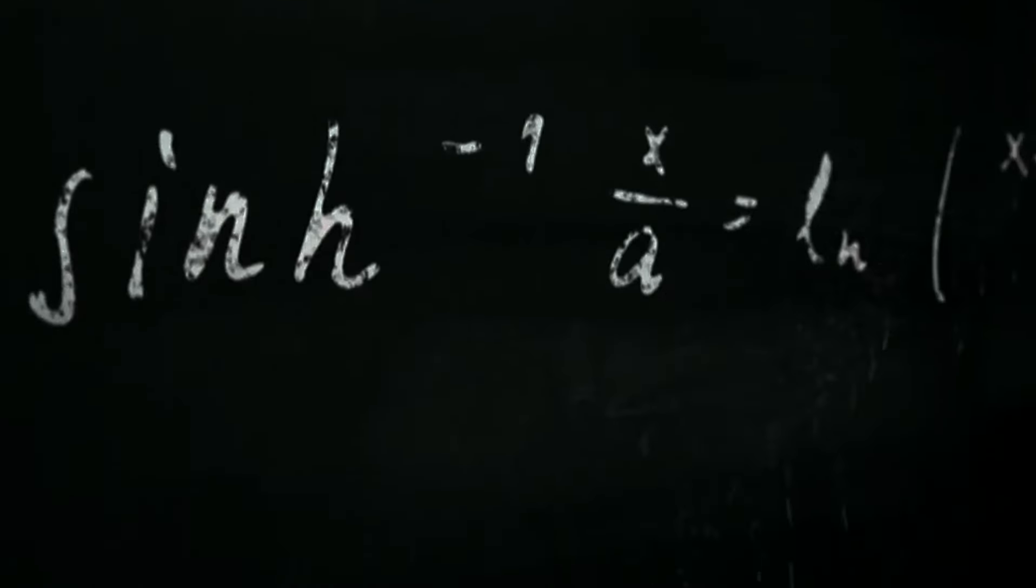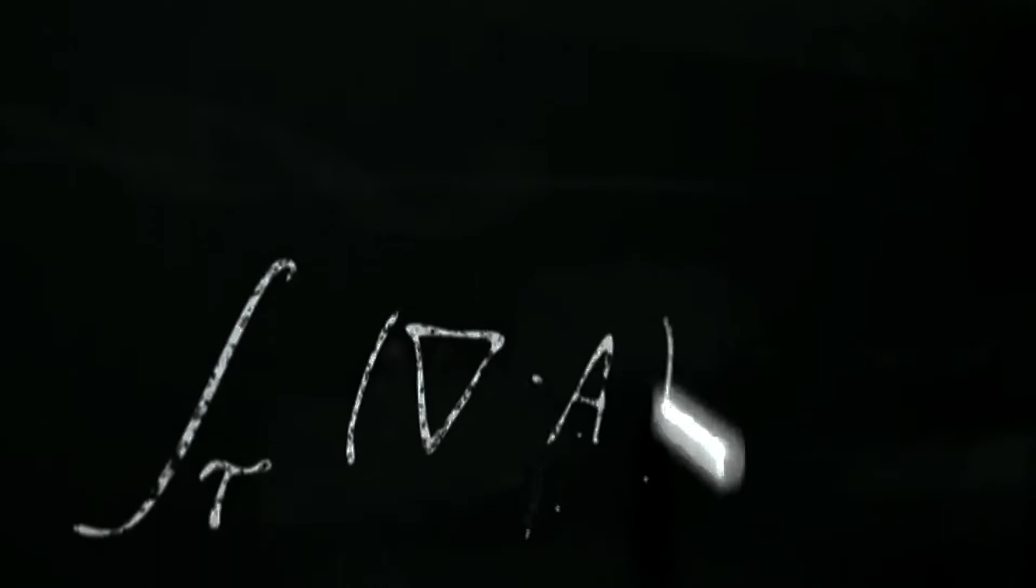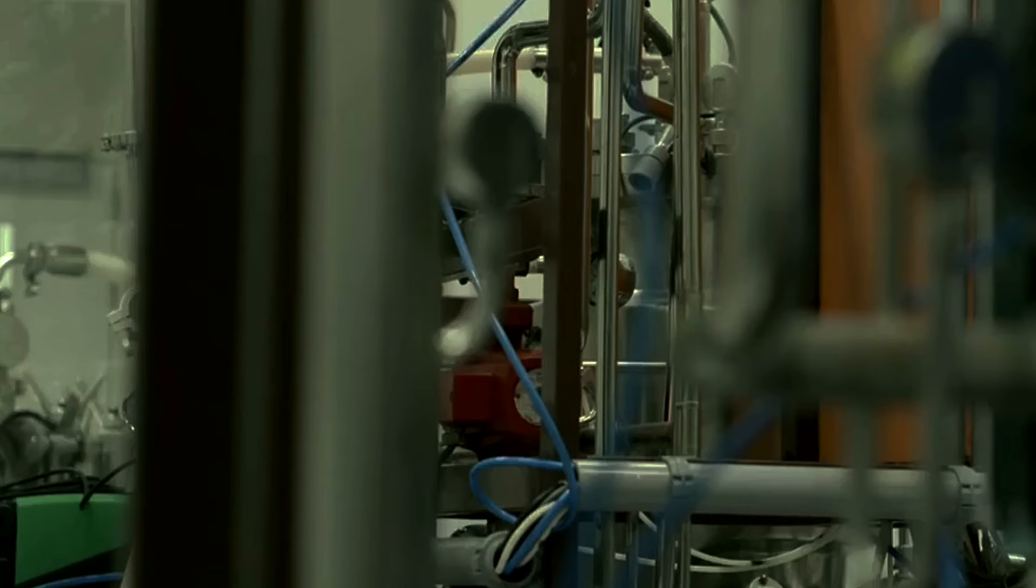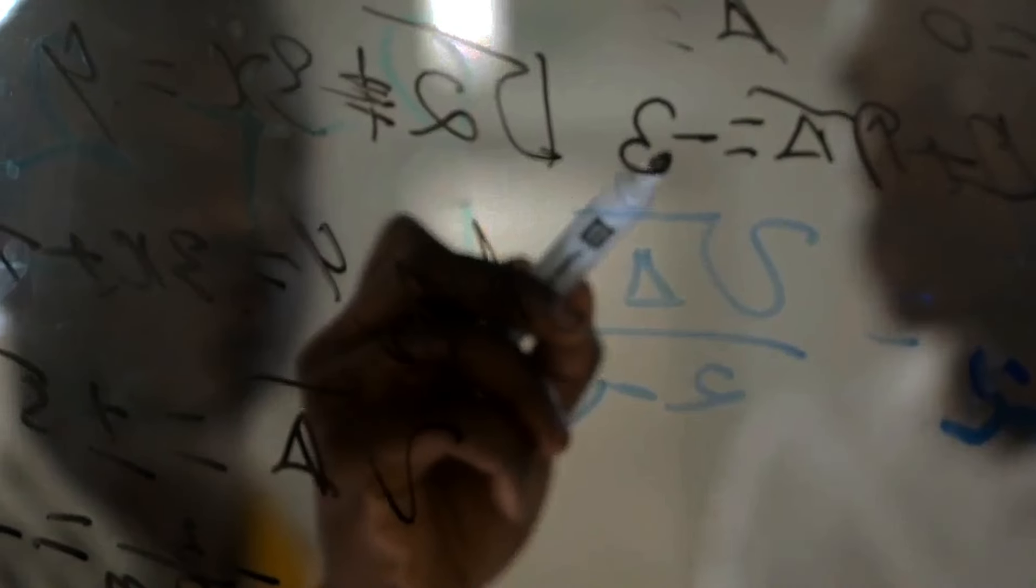Another enigma is quantum gravity. General relativity and quantum mechanics are the two pillars of modern physics, yet they are fundamentally incompatible. How can we reconcile them into a single unified theory? Theories like string theory and loop quantum gravity are promising, but they are still in development and lack experimental verification.